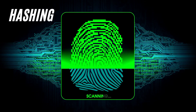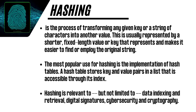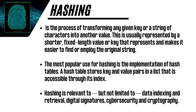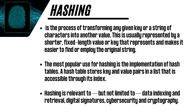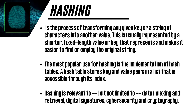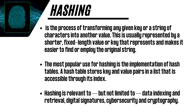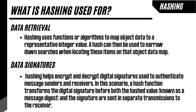Hashing is the process of transforming any given key or string of characters into another value. This is usually represented by a shorter, fixed-length value or key that represents and makes it easier to find or employ the original string. The most popular use for hashing is the implementation of hash tables. A hash table stores key and value pairs in a list that is accessible through its index. Hashing is relevant to — but not limited to — data indexing and retrieval, digital signatures, cybersecurity, and cryptography. Hashing uses functions or algorithms to map object data to a representative integer value. A hash can then be used to narrow down searches when locating items on that object data map.